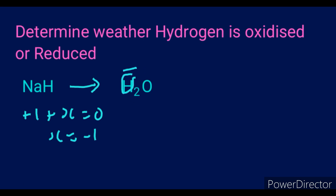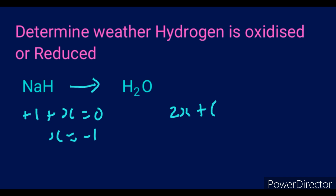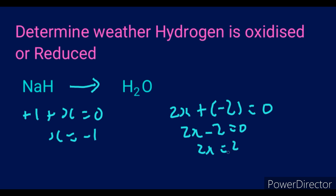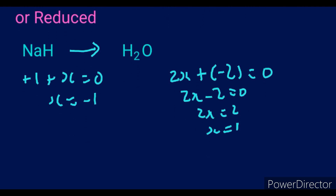On the right hand side we have H₂O with total charge zero. Setting up the equation: 2x + (−2) = 0, so 2x = 2 and x = 1. Hydrogen changed from −1 on the left to +1 on the right. Since the charge increased in the positive direction, hydrogen was oxidized.